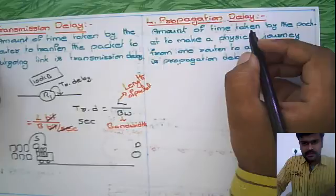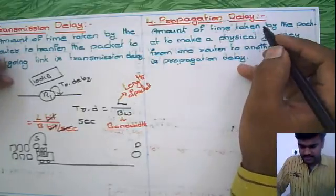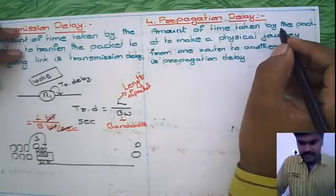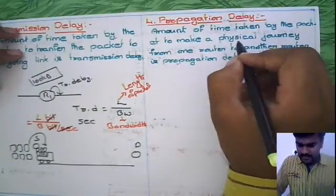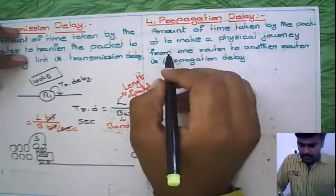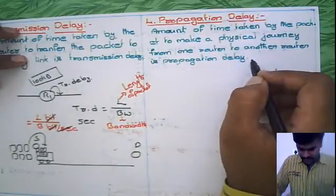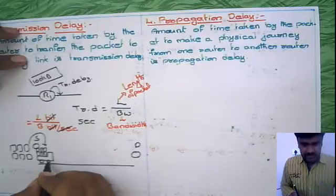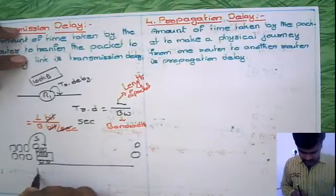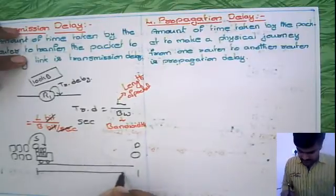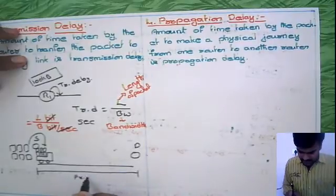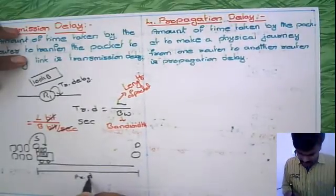Moving to the next definition, propagation delay: the amount of time taken by the packet to make a physical journey from one router to another router is the propagation delay. If you consider this example, how much time from here to here it is taking, this we are calling as propagation delay.